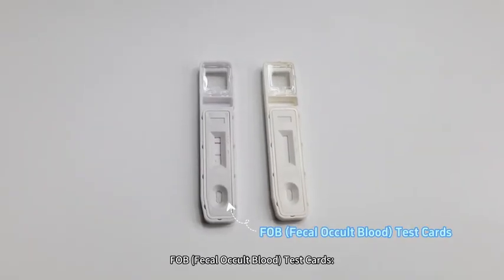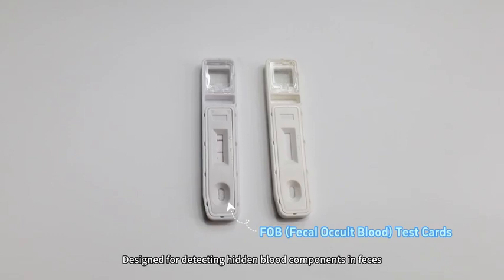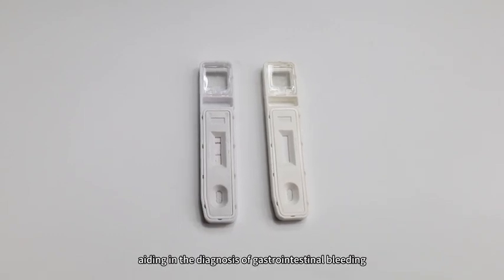FOB (Fecal Occult Blood) Test Cards are designed for detecting hidden blood components in feces, aiding in the diagnosis of gastrointestinal bleeding.